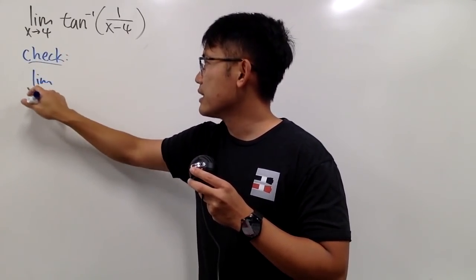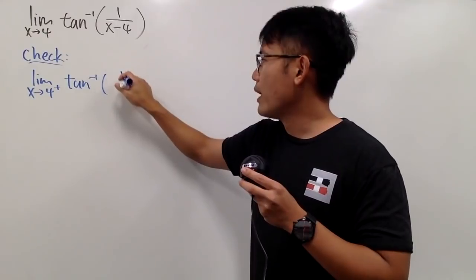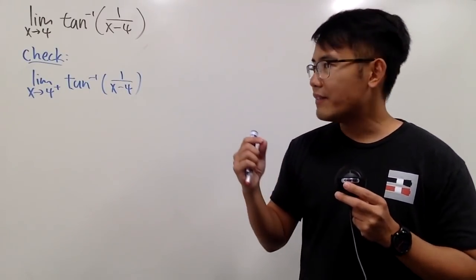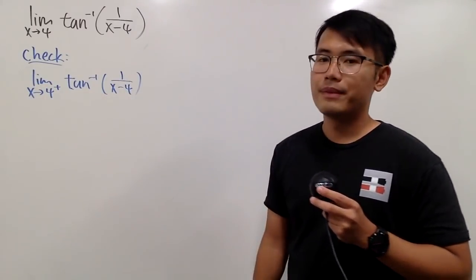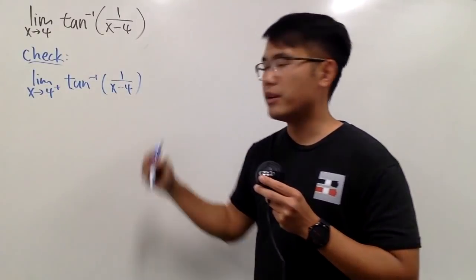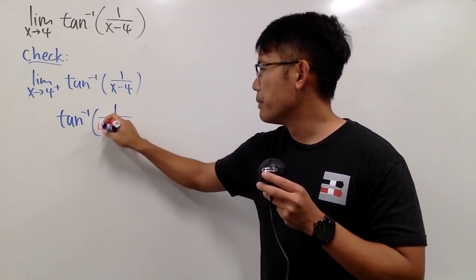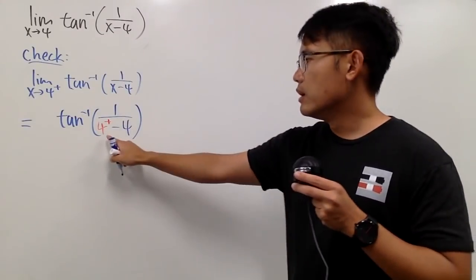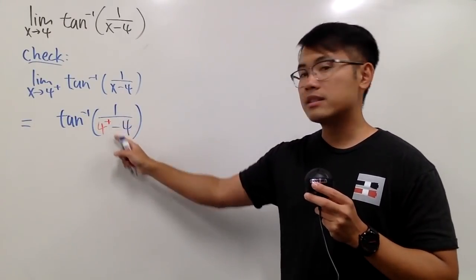Let's first check the limit as x approaches 4 from the positive side of inverse tangent of 1 over (x minus 4). When we have 4 plus, just imagine a number slightly bigger than 4, like 4.0001. Plugging 4 plus in, we get inverse tangent of 1 over (4 plus minus 4). That gives us 4.001 minus 4, which is 0.001 — in other words, that's like 0 plus.